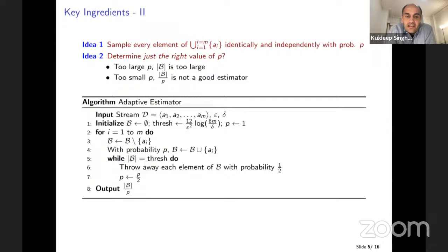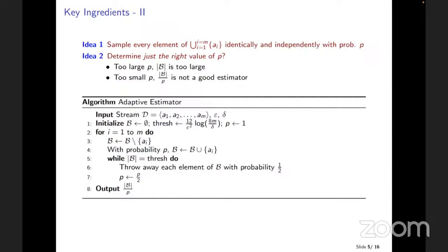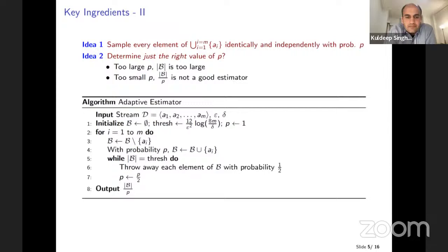The threshold expression is one over epsilon squared times log one by delta. The epsilon squared and log one by delta are natural dependences. Every element in B is a unique element. By throwing away, you're actually throwing away what you've collected so far.